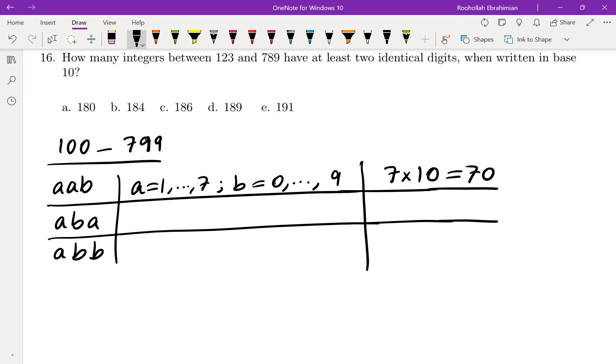Now the second one, a could be anywhere from 1 to 7, b could be anywhere from 0 to 9, but I don't want to count the ones that I have already counted.